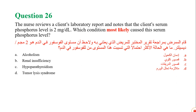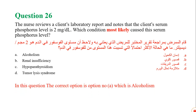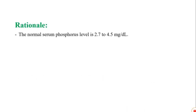In this question, the correct option is option number A, which is alcoholism. The normal serum phosphorus level is 2.7 to 4.5 mg per deciliter. The client is experiencing hypophosphatemia.